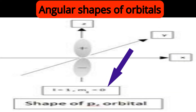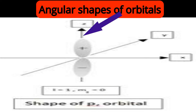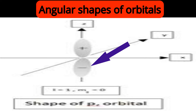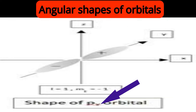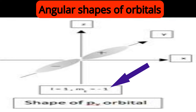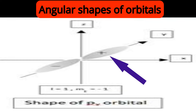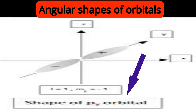For ml equal to zero, we represent this orbital as the pz orbital because it is along the z-axis. The shape is the same dumbbell shape — one lobe is positive and the other lobe is negative. The third p orbital, with ml equal to −1, lies along the y-axis, so it is the py orbital — one lobe positive, the other negative.